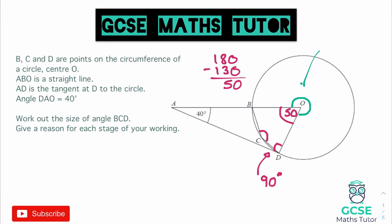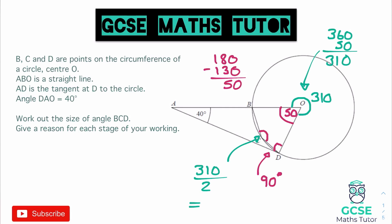To find the reflex angle, we take 360 minus 50, which gives 310 degrees. The reason: angles around a point add up to 360 degrees. Now we can use that to find the angle at the circumference, since we now have an angle at the centre and the related angle at the circumference. It's going to be half of 310: so 310 divided by 2 gives us 155 degrees.